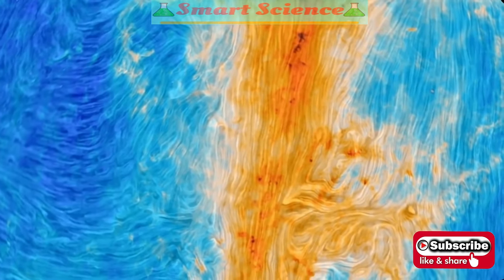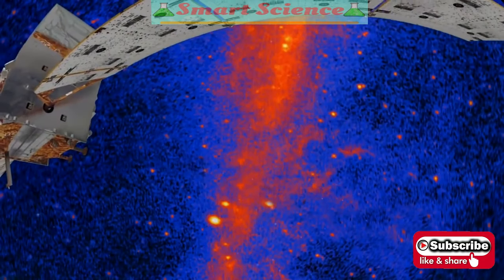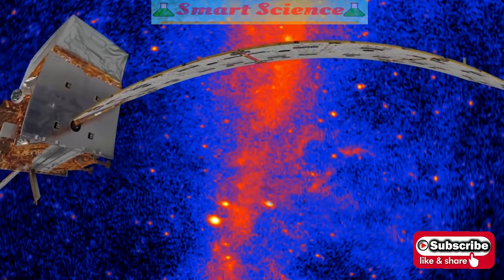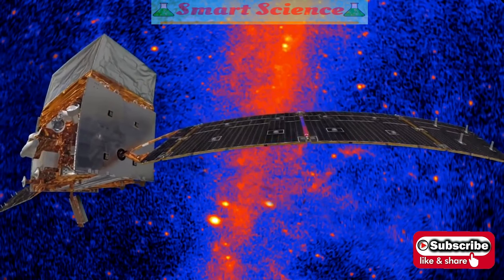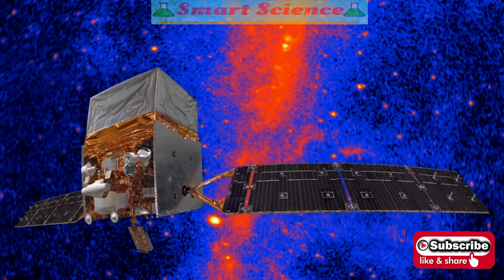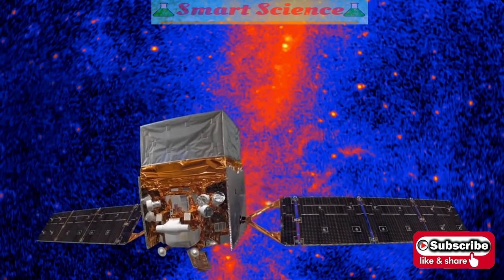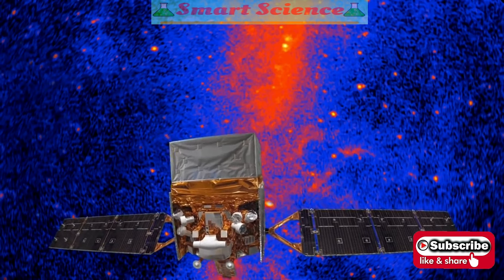Our galaxy also looks very different in gamma rays, the most energetic part of the spectrum. Orbiting gamma ray observatories like Fermi can pinpoint the most energetic light sources in the universe. These are often collapsed stars with tightly wound magnetic fields focusing the light they emit.